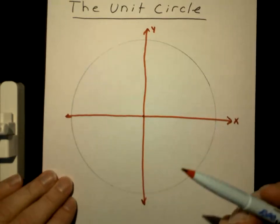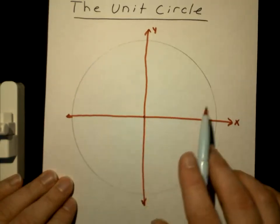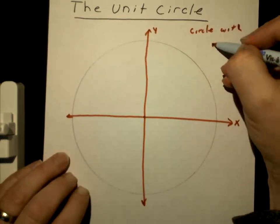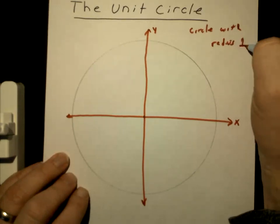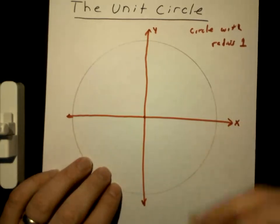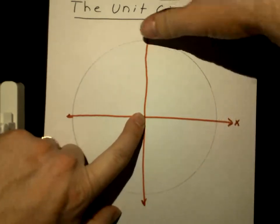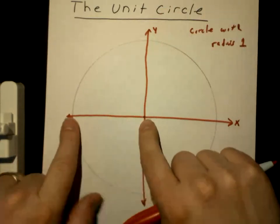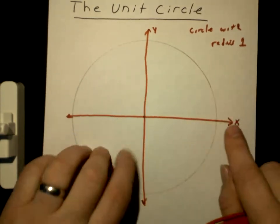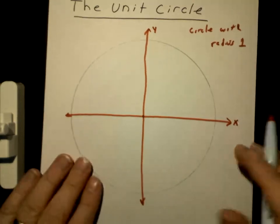Why is it called a unit circle? Think of it as a circle with a radius of one. This is a circle with a radius of one. Because the radius is one, every point on the circle is one unit from the center — this side is one, this side is one, and so on.